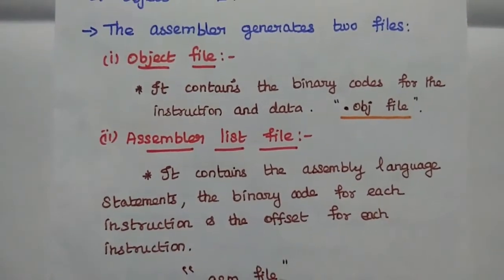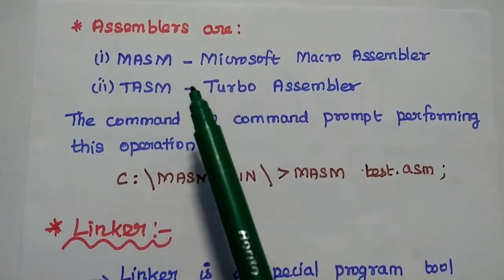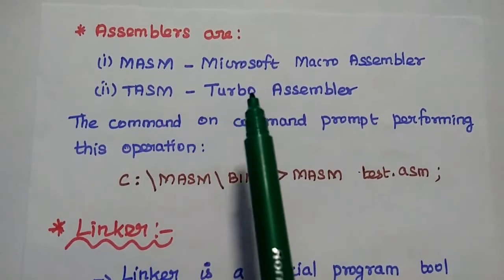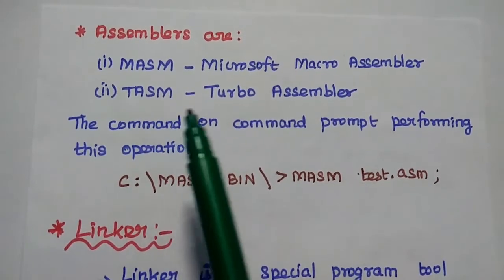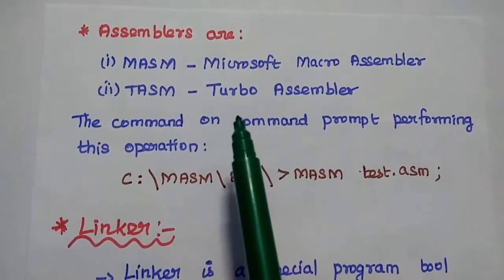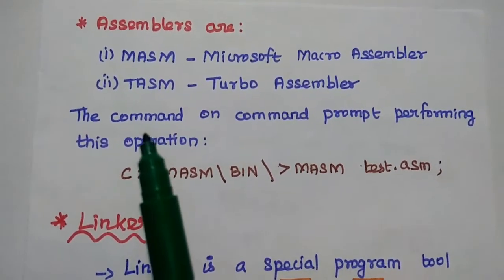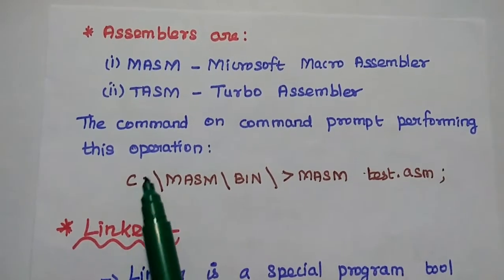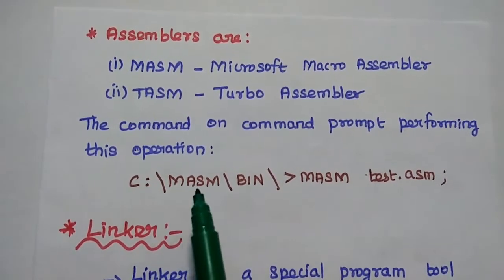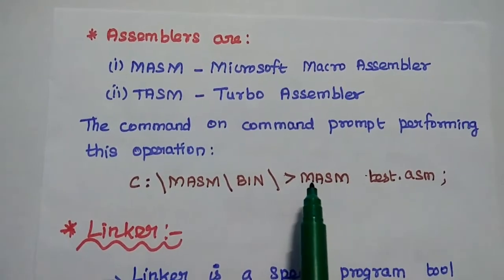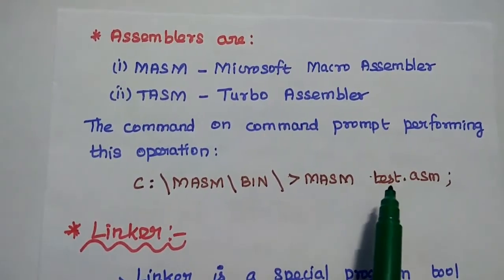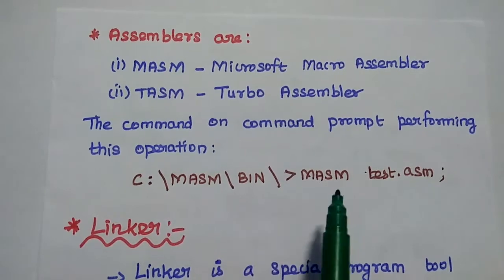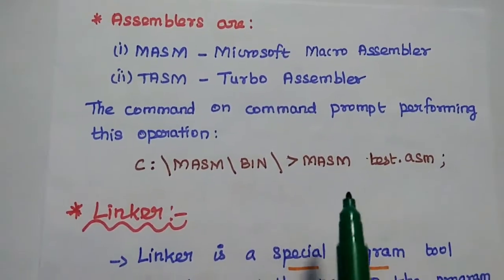These two files are generated by the assembler. Two types of assemblers are used: one is MASM, that is Microsoft Macro Assembler, and the next one is TASM, Turbo Assembler. We can use any one of these two assemblers. The command prompt for performing this operation is given as: C: masm bin — we state MASM and the filename with .asm extension. It then translates the assembly language into object code or machine language.